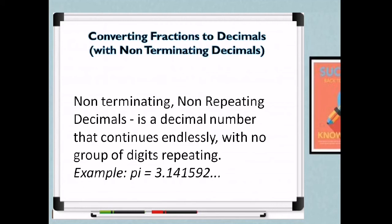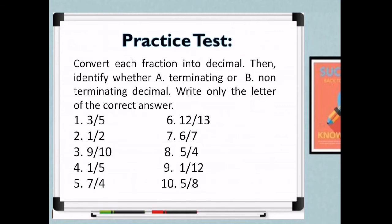That's the end of our lesson on converting fractions to decimals. I hope you learned how to differentiate terminating and non-terminating decimals. Now get your notebook to answer our practice test: convert each fraction into decimal, then identify whether it is A — terminating, or B — non-terminating decimal. Write only the letter of the correct answer.